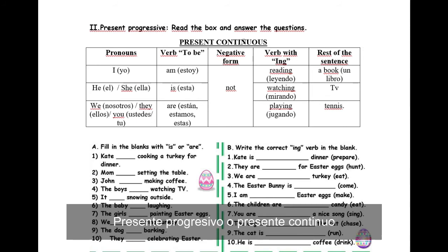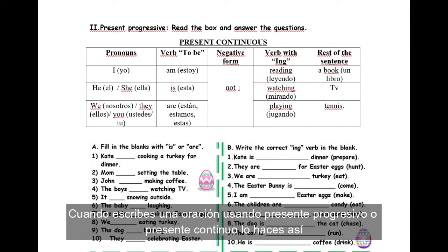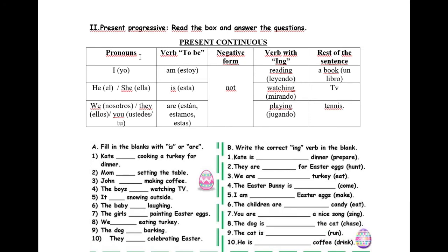Now, present progressive or present continuous. Present progressive or present continuous is to describe actions that are happening right now. Now, when you write a present progressive or present continuous sentence, you do it like this. First, the pronoun, I, yo, he, el, she, ella, we, nosotros, they, ellos, you, ustedes, o tú. The verb to be, ser o estar, I am, yo estoy, he, she, it, el, ella o eso está, we, they, you, are, están, estamos, estás. Cuando vas a negar, tienes que agregar, después del verbo to be, not.